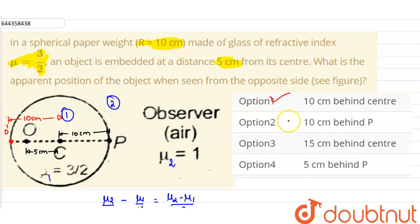10 centimeters behind P is incorrect, it is at 20 centimeters. 15 centimeters from the center, incorrect. 5 centimeters behind P is also incorrect. So the correct option will be option 1.